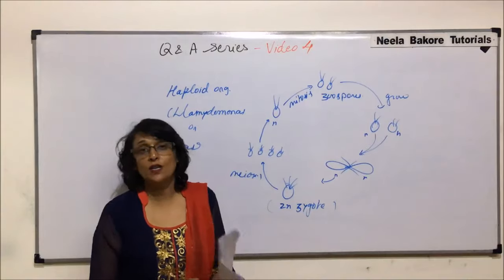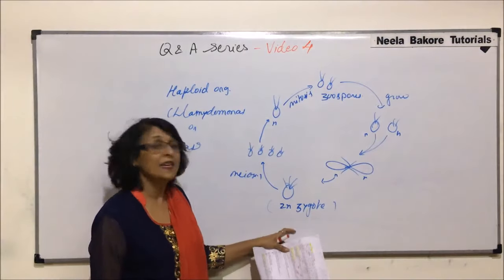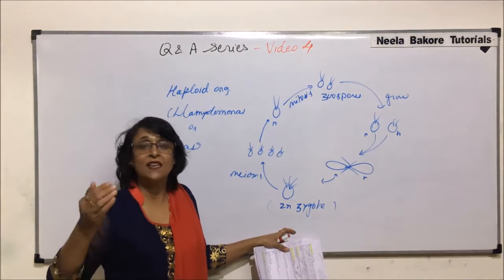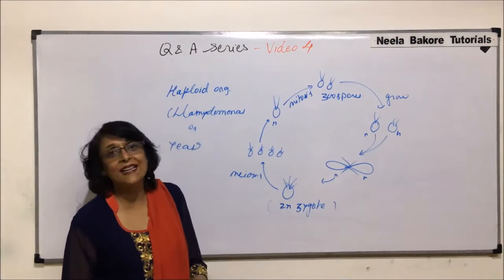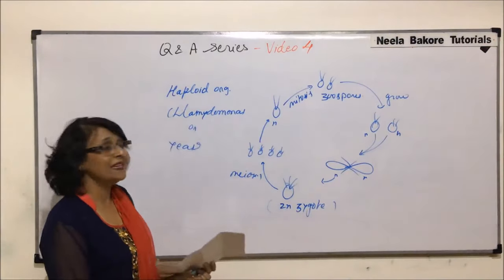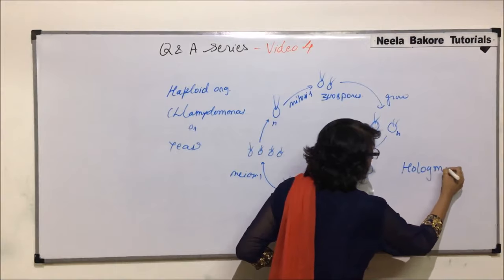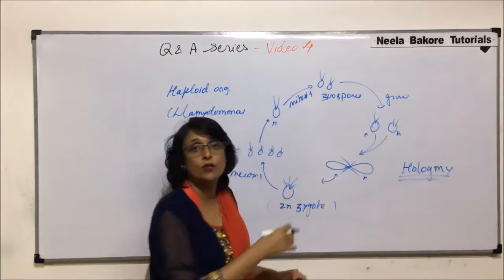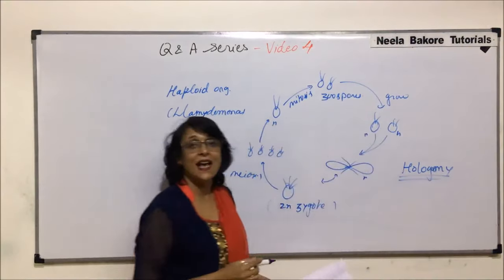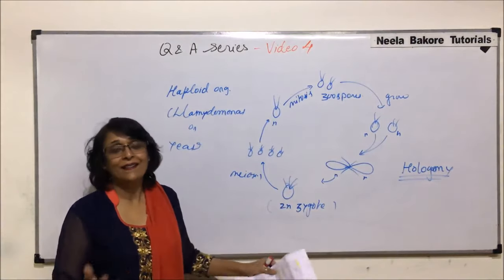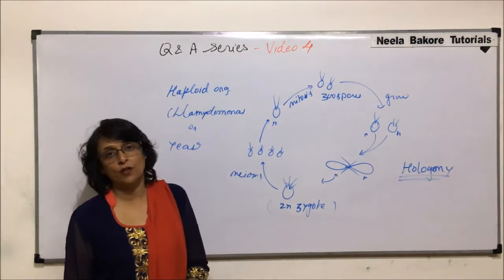This process in Chlamydomonas differs from higher organisms where meiosis occurs in germinal cells. Here, the individual cell acts as a gamete — this is called hologamy. The haploid cells fuse to form a zygote, the zygote divides by meiosis, and haploid cells are again formed.